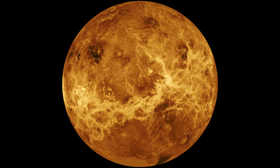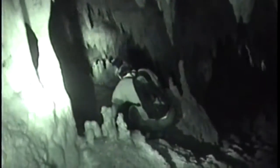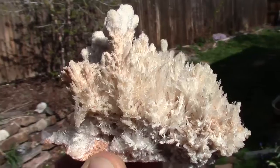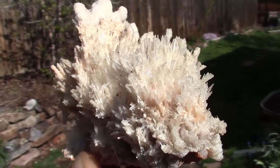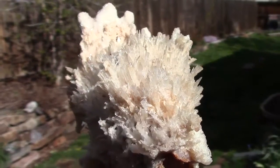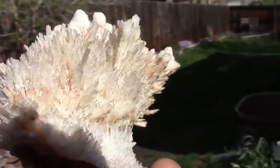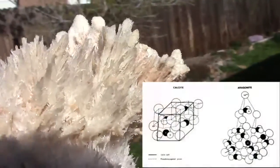In exploration of deep and mysterious caves, most formations are made of calcite, but some formations are CaCO3 but not calcite. Instead, these formations are made of a more fibrous mineral — aragonite — which is what we call a polymorph of calcite: the same CaCO3 formula, but a different crystal structure.